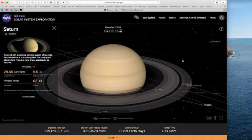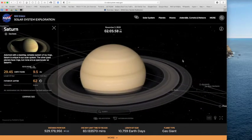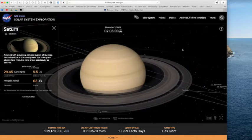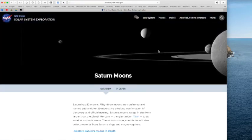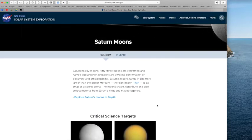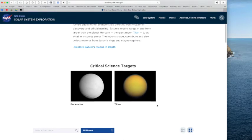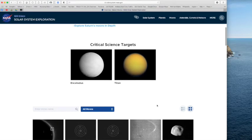Let's visit Saturn and its many moons by going once again to solarsystem.nasa.gov. Let's first of all look at the beautiful planet Saturn. Saturn is famous for its ring system. Here you can see the beautiful rings of Saturn and the bands of Saturn. Now for moons, how many moons does Saturn have? It has 82 known moons. 53 of these moons are confirmed and named. Another 29 are waiting confirmation of discovery.